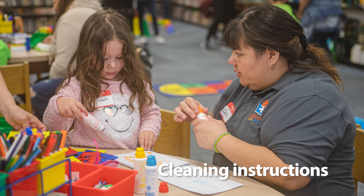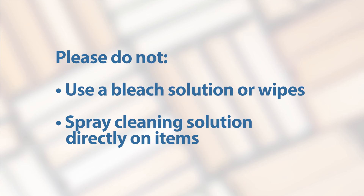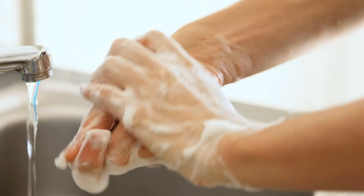If the item does not come with cleaning instructions, please use one of the following methods. For electronics, use 70% alcohol wipes. For all other surfaces, use a water and soap solution, spray it on a paper towel, and wipe down the item. Each library site is equipped with a portable UVC sanitizer that can be used on most surfaces. Please do not use a bleach solution or wipes, or spray cleaning solutions directly on items. For your safety, wash your hands before and after cleaning items, or use gloves.